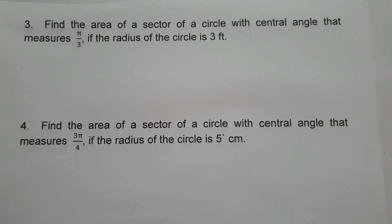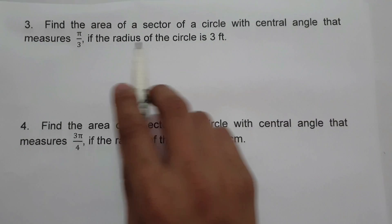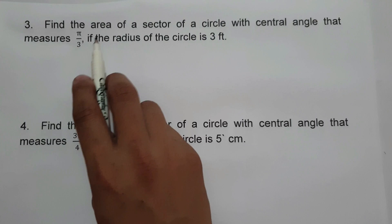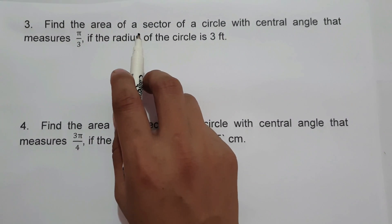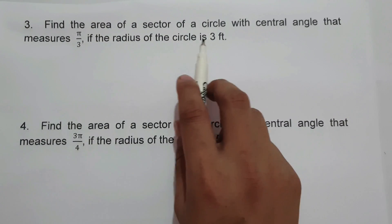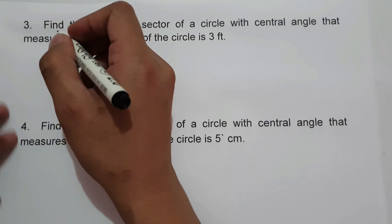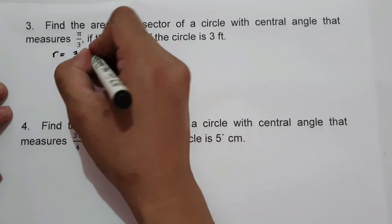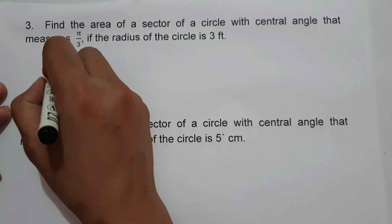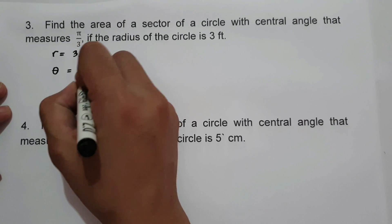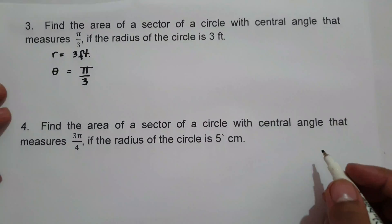On example number 3, find the area of the sector of a circle with a central angle that measures pi over 3 if the radius of the circle is 3 feet. As you can see, the central angle is already in radian, so we just substitute directly. The given are: radius is 3 feet, and the central angle is pi over 3.